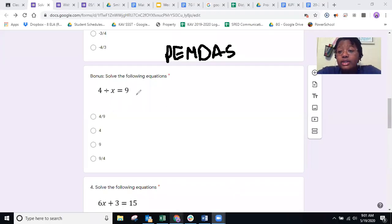All right, so this is 4 divided by x equals 9. I know you're probably looking at this and being like, well, what do I do?